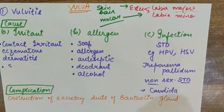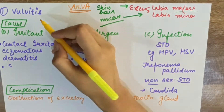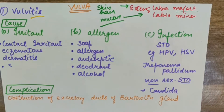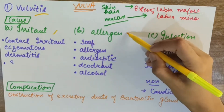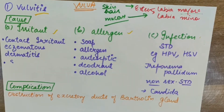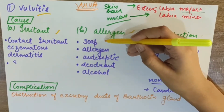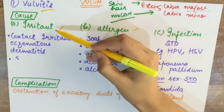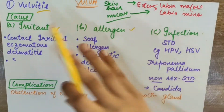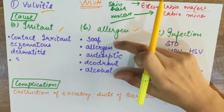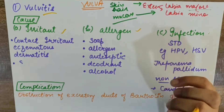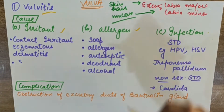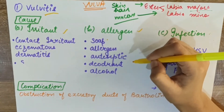Now we will study vulva diseases. First we will study inflammation. When we talk about inflammation, we add the suffix '-itis', so it becomes vulvitis. Vulvitis has three main causes: irritant, allergen, and infection. Irritant and allergen agents can sometimes be the same things.